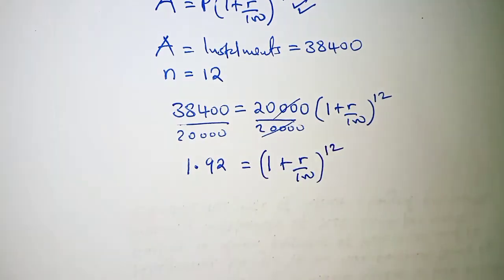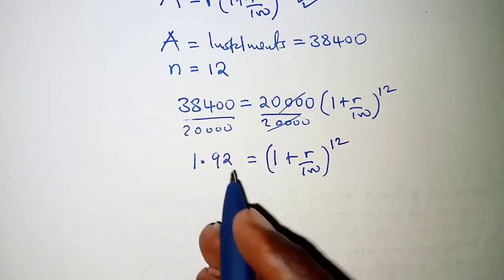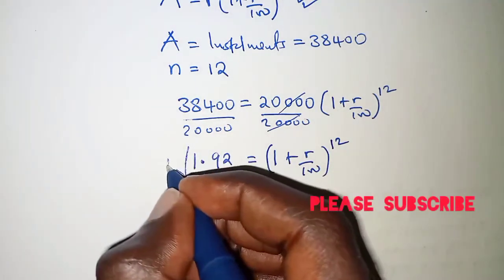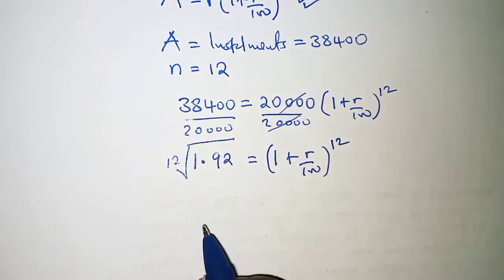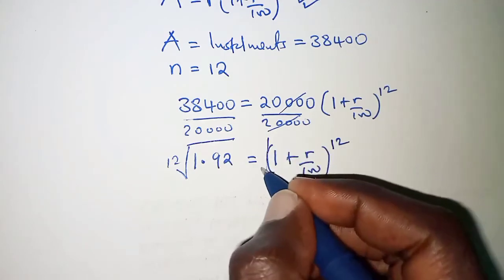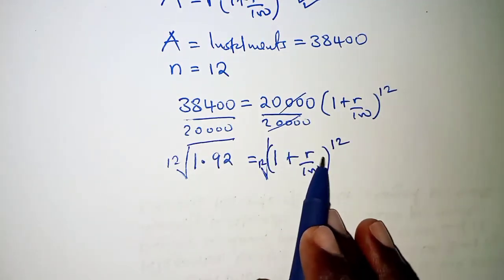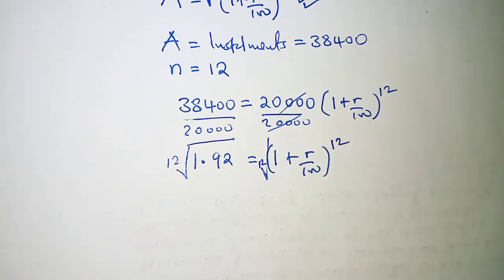At this particular step we will therefore get the 12th root on both sides of the equation. So on the left hand side we have the 12th root of 1.92, and on the right hand side you also have the 12th root of 1 plus r over 100 raised to power 12.